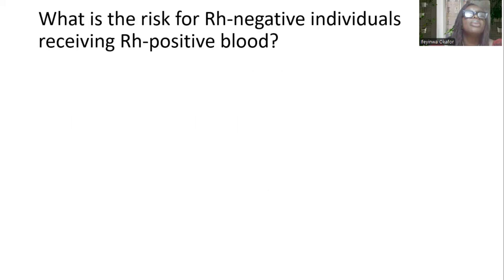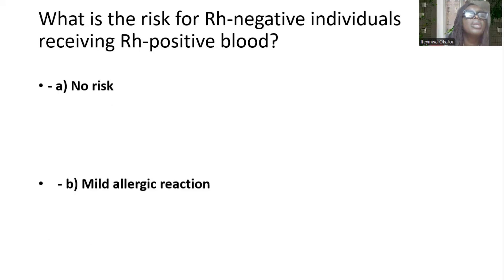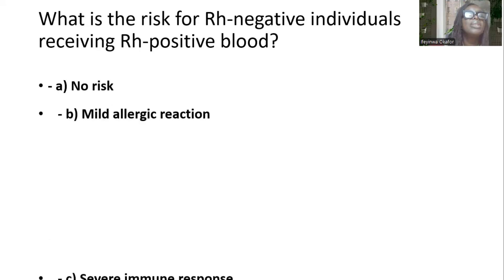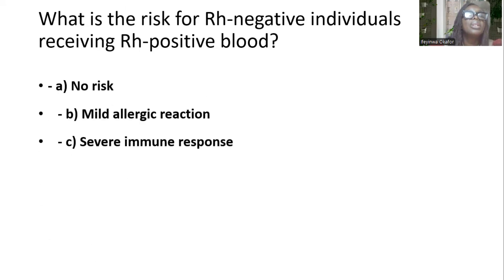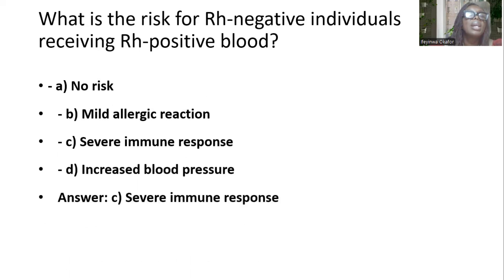What is the risk when an RH-negative individual receives RH-positive blood? Options are no risk, mild allergic reaction, severe immune response, and increased blood pressure. And the answer is C — severe immune response.